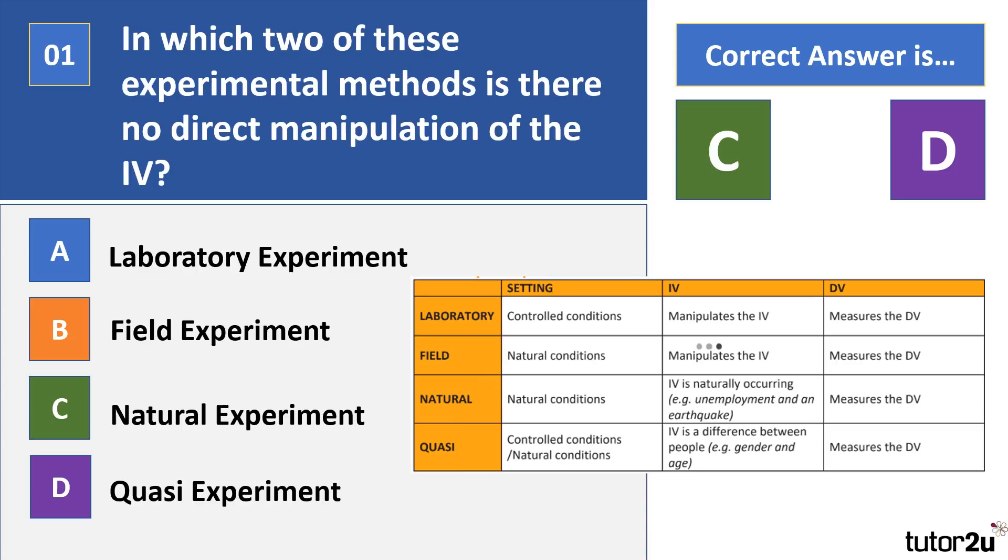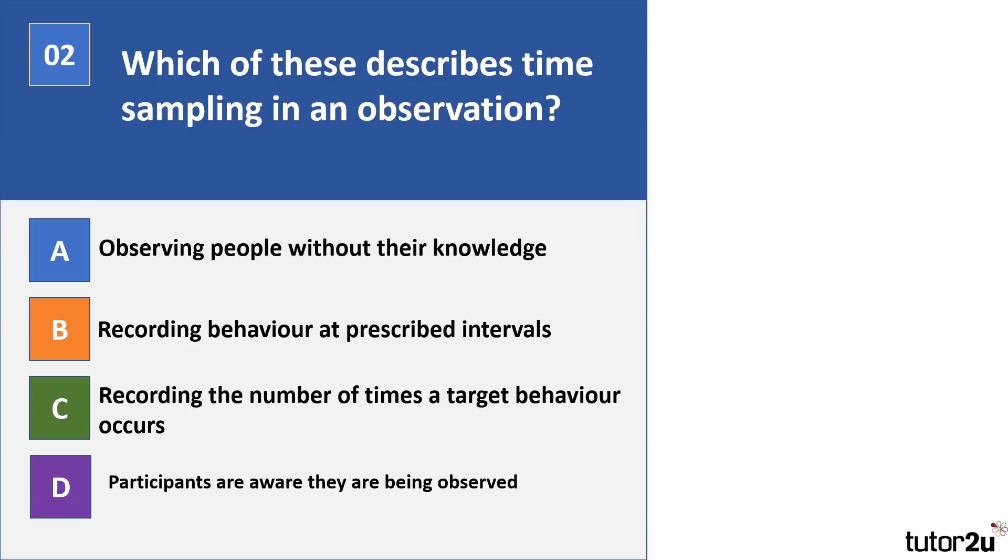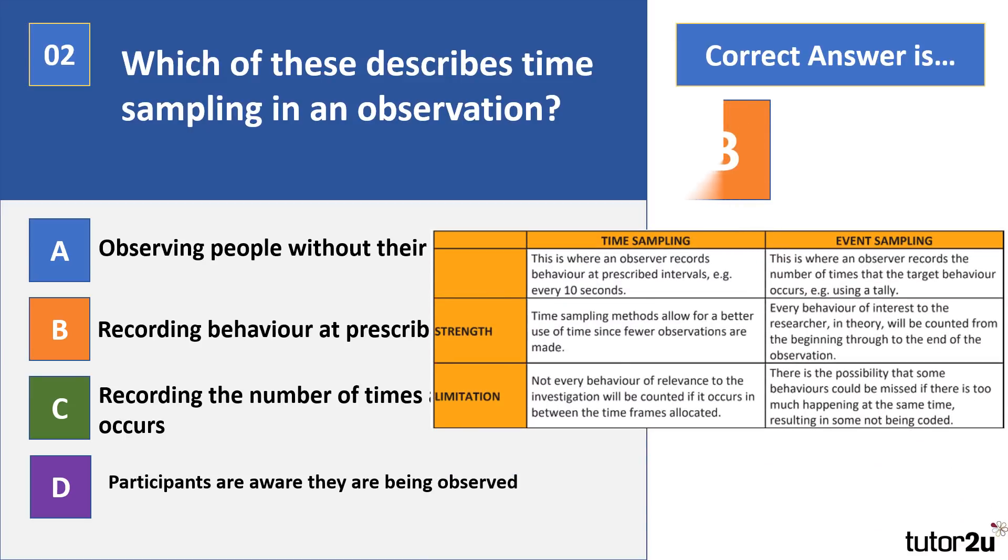Okay, next one. Which of these describes time sampling in an observation? Have a look through the answers there and pause the video. Right, your correct answer there is B.